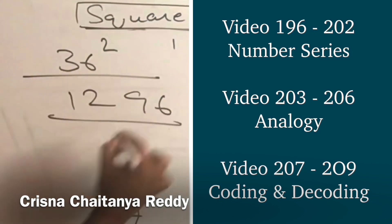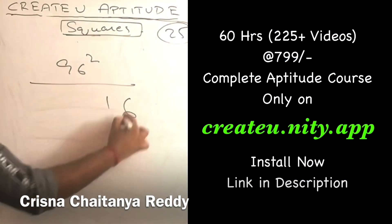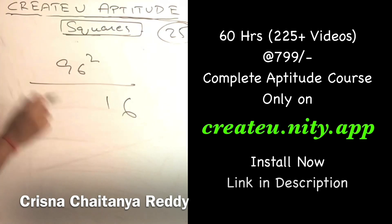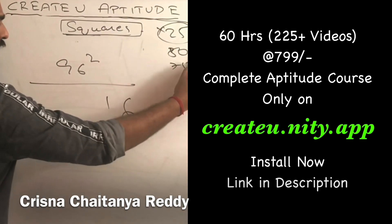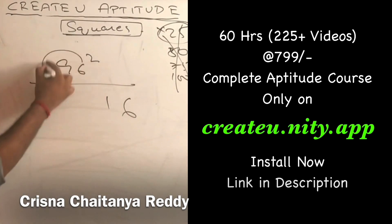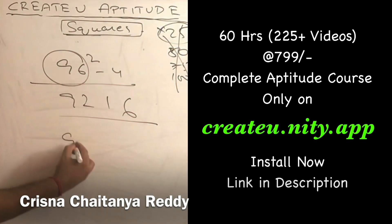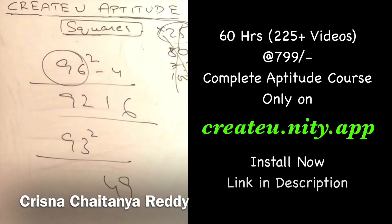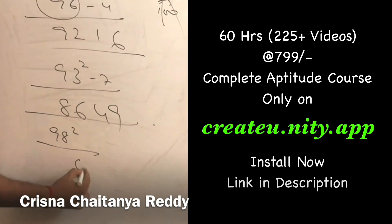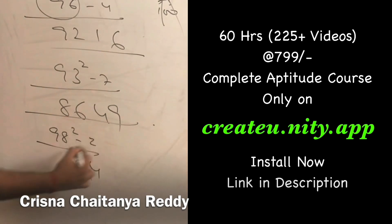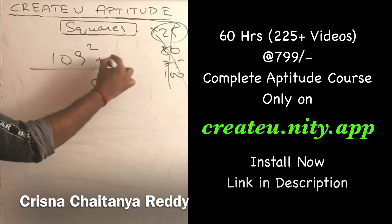For 36 squared: 14 less than 50, 14 squared is 196 - write 96, carry 1. 25 minus 14 is 11, plus 1 is 12. Answer: 1296. For numbers close to 100, take 96 squared: 4 less than 100, 4 squared is 16. It's less than 100, so subtract 4 from the given number itself: 96 minus 4 is 92. Answer: 9216. For 93 squared: 7 less, 7 squared is 49, 93 minus 7 is 86. For 98 squared: 2 less, 2 squared is 04, 98 minus 2 is 96. Answer: 9604.